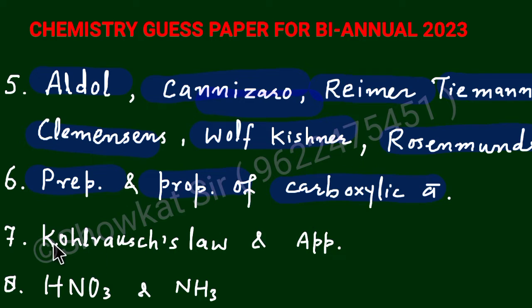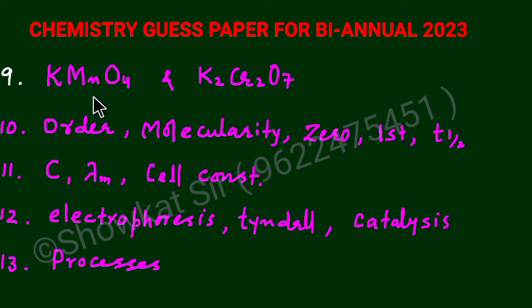Next very important topic is the Kolrausch's law and its application to calculate actually the molar conductivity at infinite dilution for weak electrolyte, similarly the dissociation constant, degree of dissociation, solubility. These are the various applications which are asked in the exam. Next very important topic will be the preparation of nitric acid by Ostwald's process, the properties of this, and similarly the preparation of ammonia by Haber's process and its reaction, properties. They will be important.